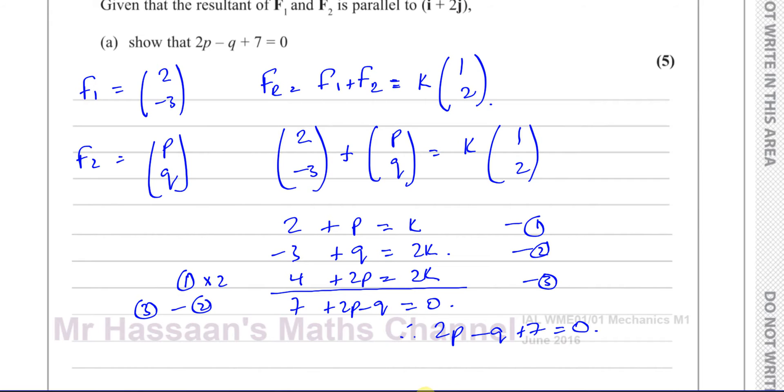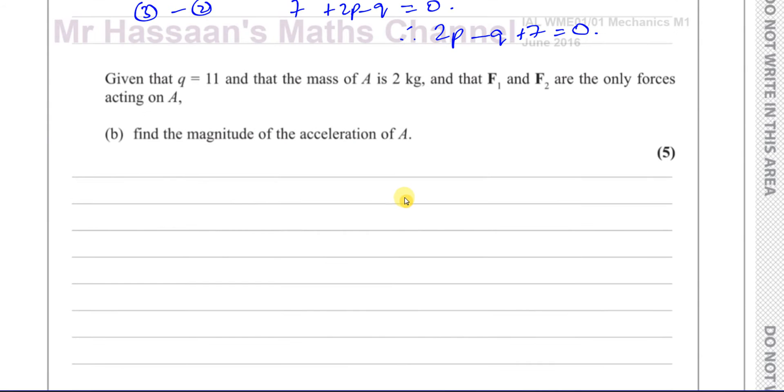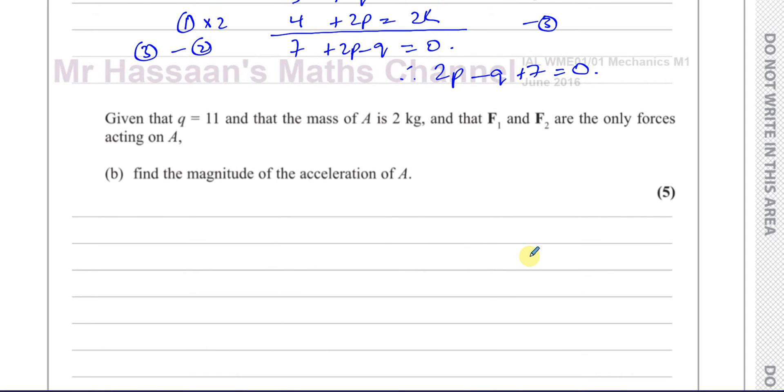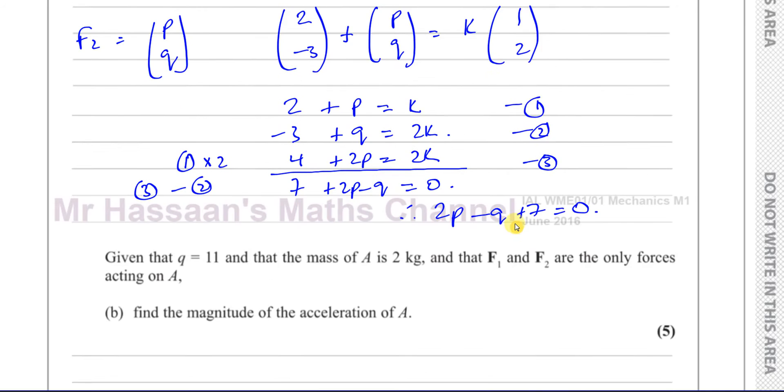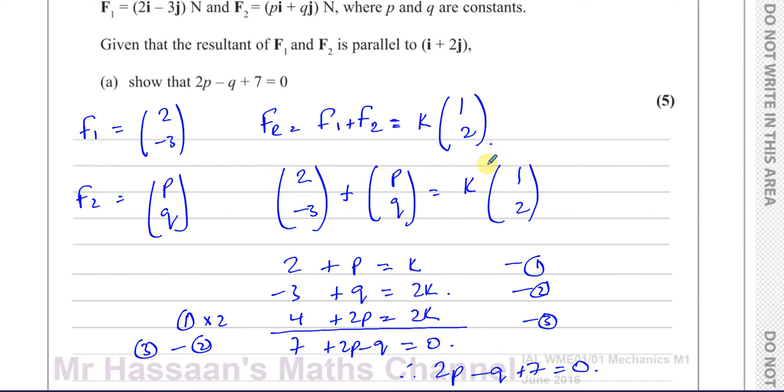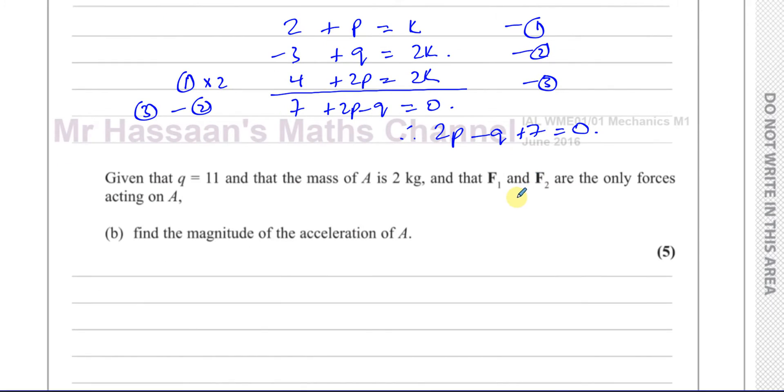For part B, it says given that Q equals 11 and the mass of A is 2 kilograms and that F1 and F2 are the only forces acting on A, find the magnitude of the acceleration of A. So this is the resultant force, which is K times (1, 2). And we know that Q is equal to 11.